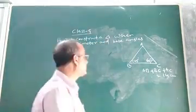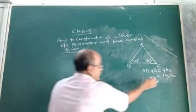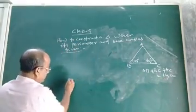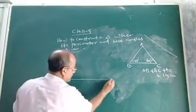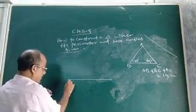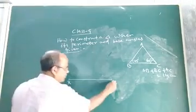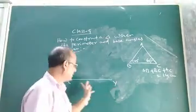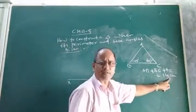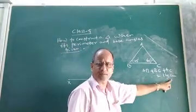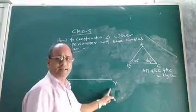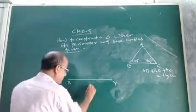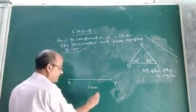The process is as follows. First, take this perimeter — suppose we name it XY. Let this perimeter of triangle ABC, which is given as 14 cm, be taken by the line segment XY. So draw XY = 14 cm.